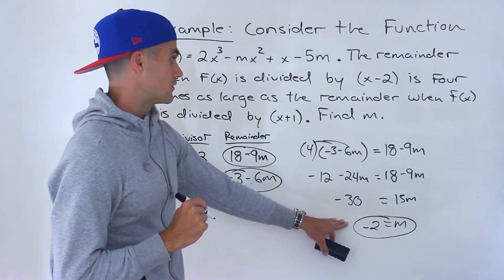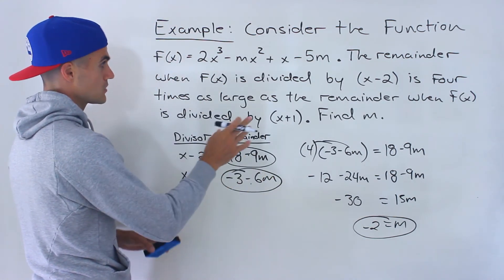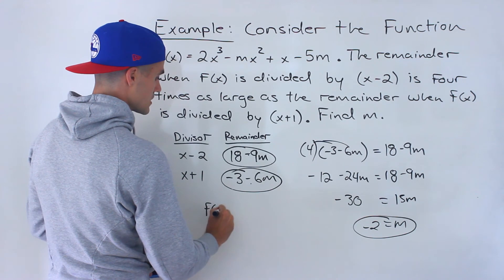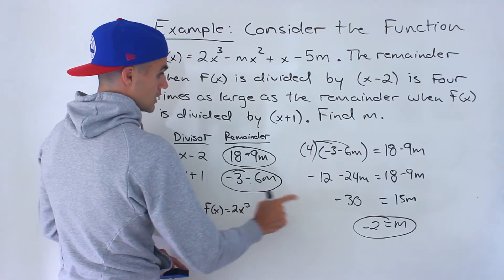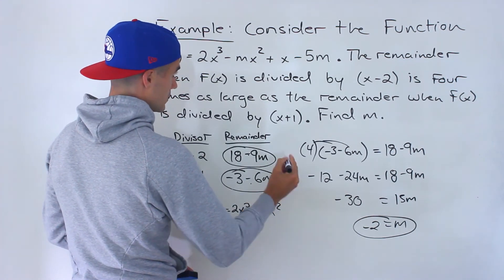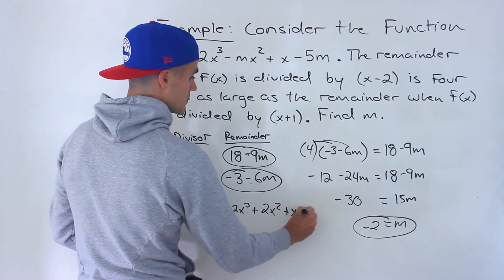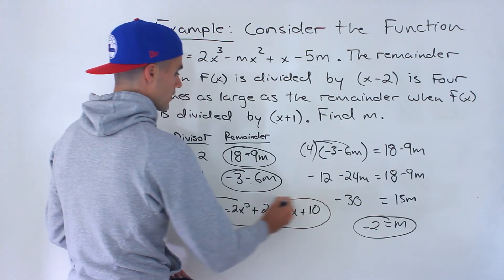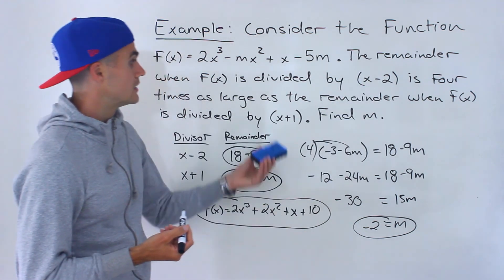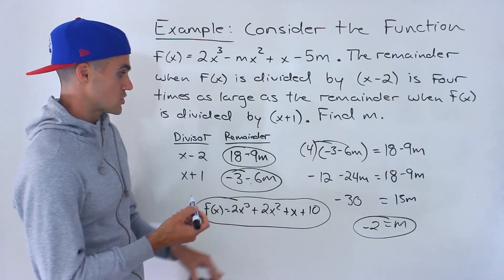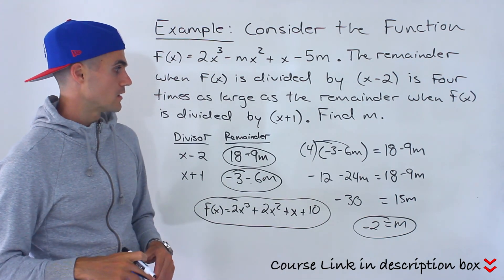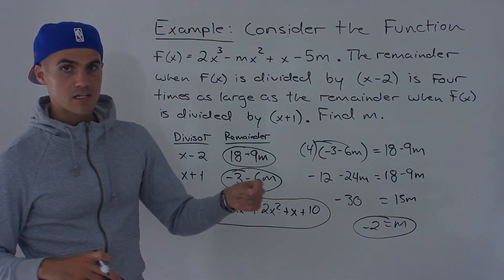That's the answer: m = -2. They didn't ask for the polynomial itself, but if they do, it would be f(x) = 2x³ + 2x² + x + 10. You could test it: divide by x minus 2 and x plus 1, then check if one remainder is four times the other. That's how you can verify your answer on the test. The final answer is m = -2.